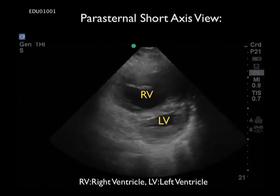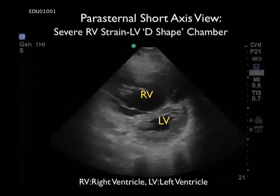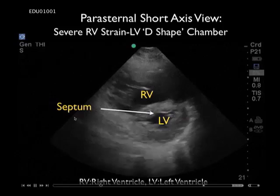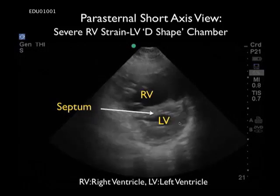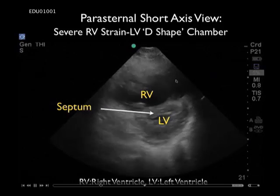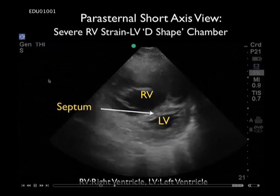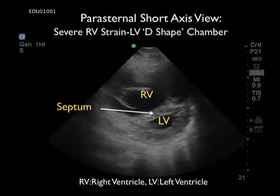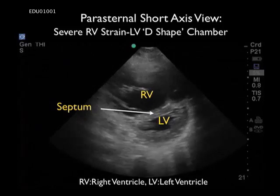We can now examine the heart in the parasternal short axis view by moving the probe 90 degrees clockwise. Now we see the heart in cross section, and notice that the chambers appear as cylinders end on. We can see the gigantic right ventricle to the top of the screen and the much smaller left ventricle as traced by the small indicator arrow. Notice here that the septum is flattened and bows away from the right ventricle due to the relatively high pressures within the RV. The LV almost takes on the appearance of a D-shaped chamber — a classic finding in a massive pulmonary embolus.